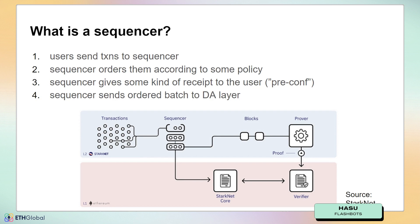And then the sequencer sends the ordered batch to the DA layer, where it basically becomes finalized from the perspective of the layer 2. This particular diagram is taken from StarkNet, but the above is how it works in pretty much every layer 2. There might be some small differences — for example, in StarkNet, the sequencer is also the prover, so they have even more responsibility, but all of these can be stripped out over time.